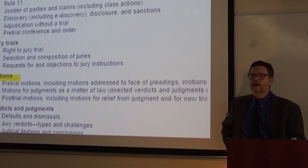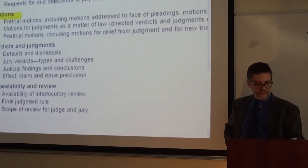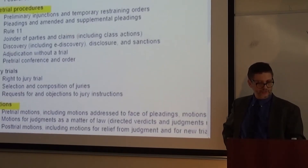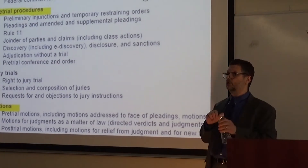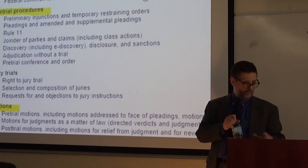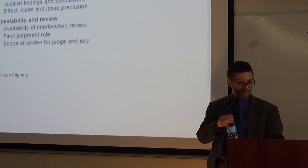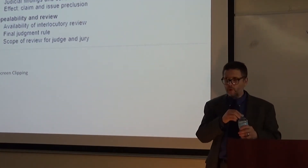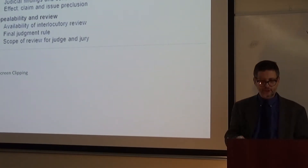The remaining nine questions will come from subsections two, four, six, and seven of the outline. That includes things like law applied by federal courts — so we're talking about the Erie Doctrine, for example — the right to jury trial, the types of judgments such as default judgment or voluntary dismissal, and finally, appealability and standards of review.